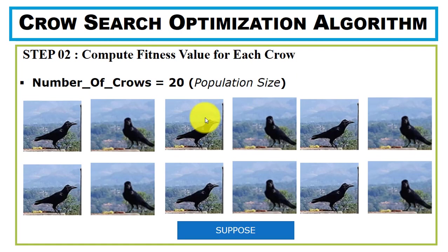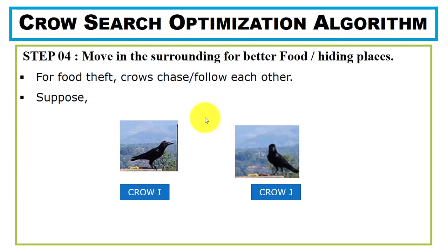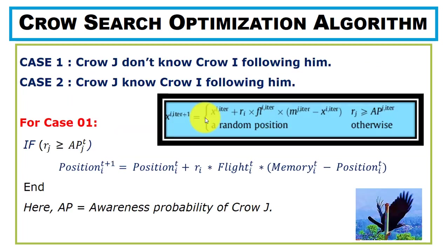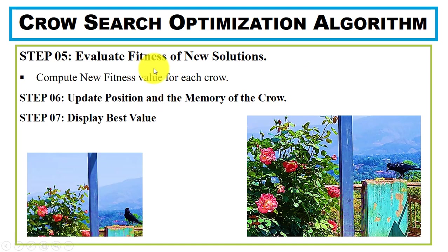To summarize: first we initialize the crow population randomly, compute the fitness value, initialize the memory for each crow, then move crows in the surrounding area for better food resources and hiding places. We check the two awareness cases, update the crow positions and memory accordingly, recompute fitness, and display the best value. In the next video we will see how this algorithm is implemented with MATLAB code. If you have any questions, comment below — all important resources are in the description box.